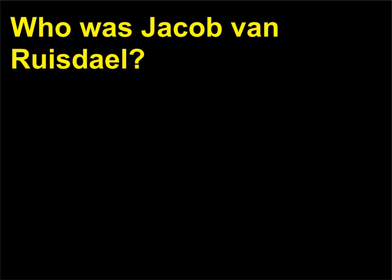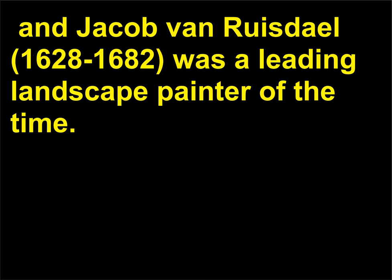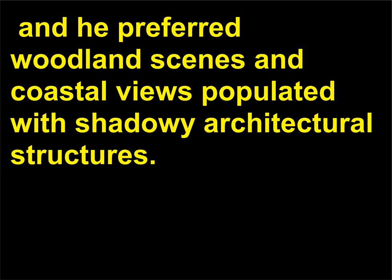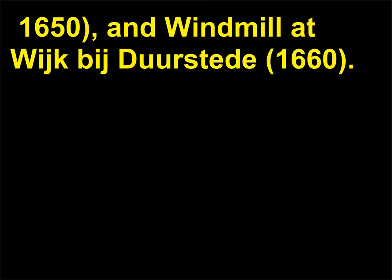Who was Jacob van Ruisdael? During the 17th century, landscape paintings became very popular in the Netherlands and other parts of Europe, and Jacob van Ruisdael was a leading landscape painter of the time. His landscapes are often dark and moody, and he preferred woodland scenes and coastal views populated with shadowy architectural structures. Examples of his expressive landscapes include The Jewish Cemetery (1655–1660), Bentheim Castle (c. 1650), and Windmill at Wijk bij Duurstede (1660).